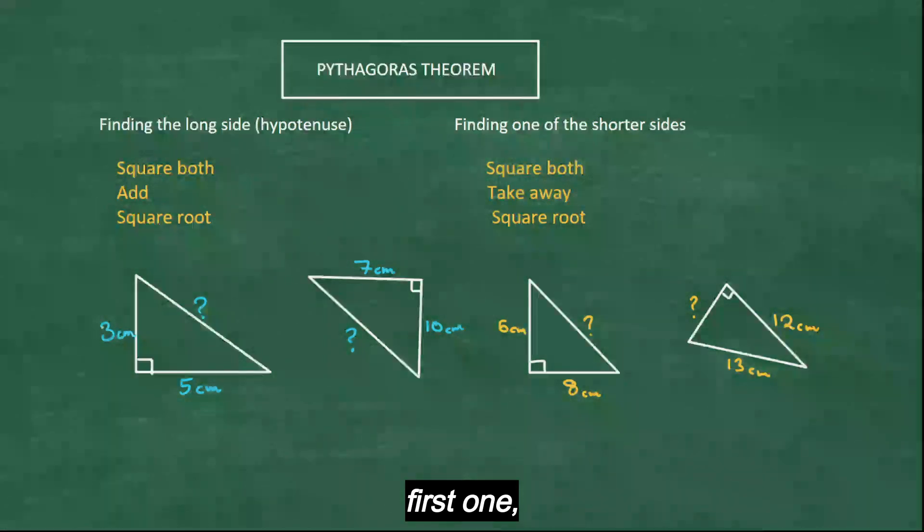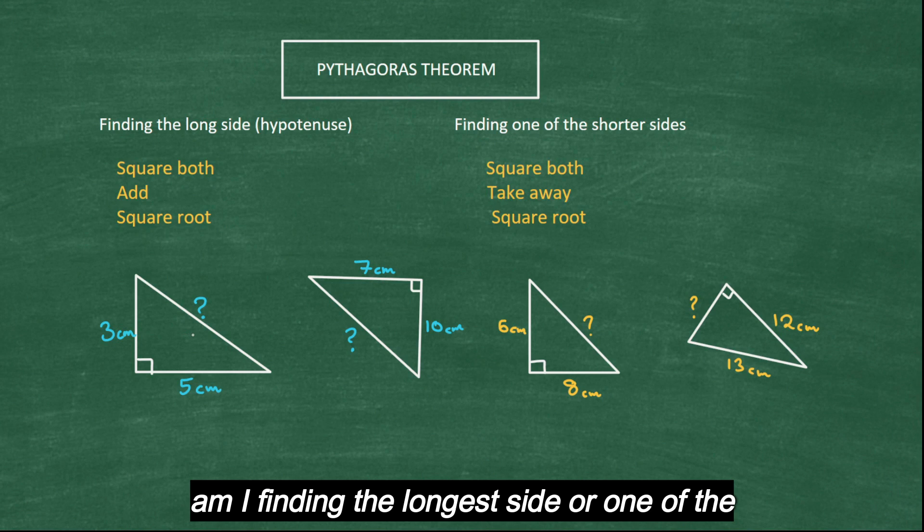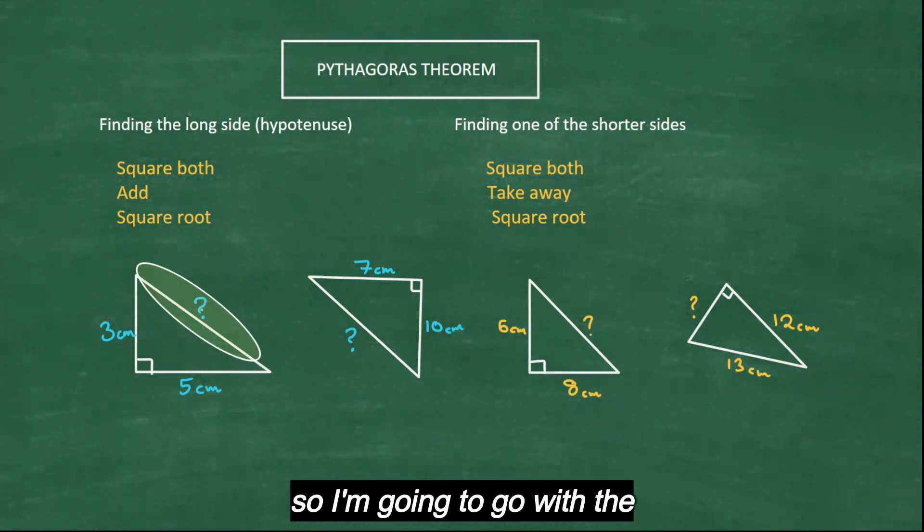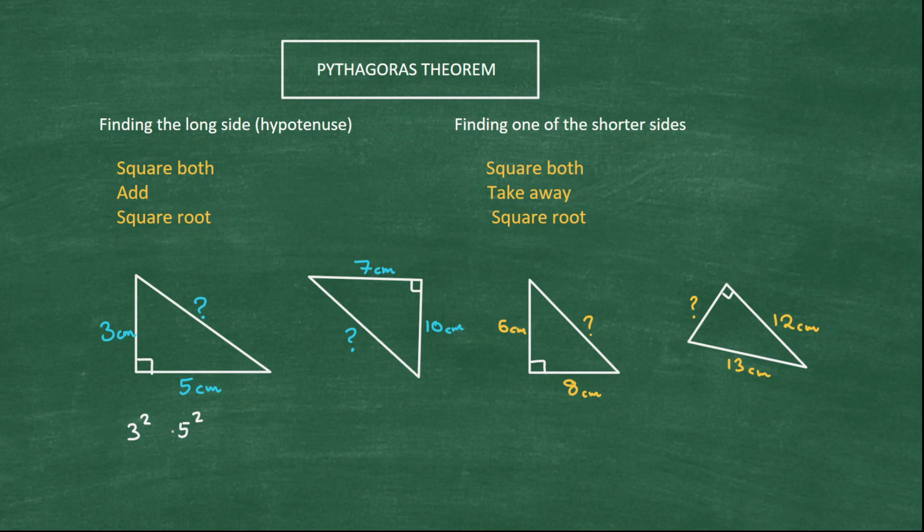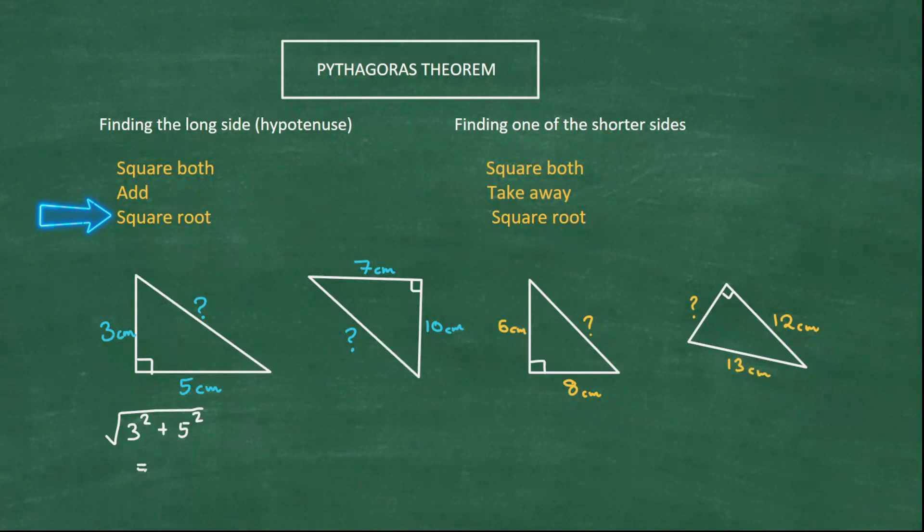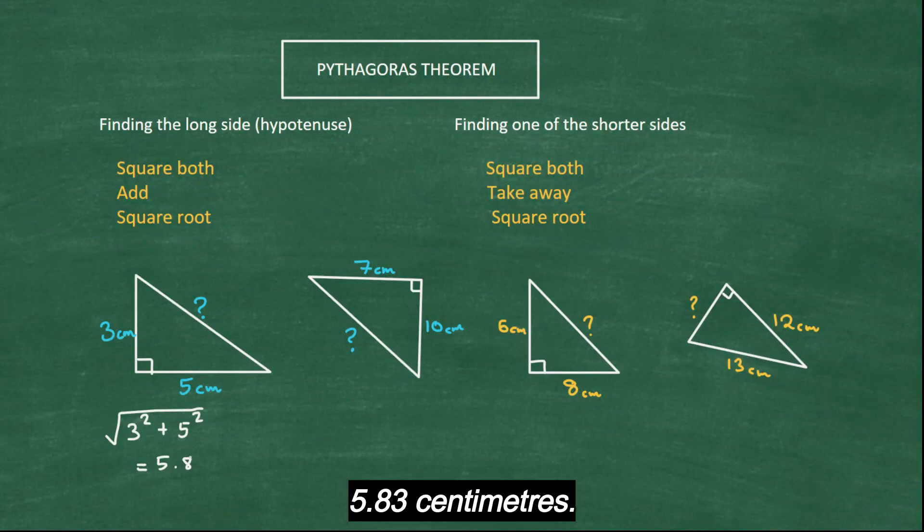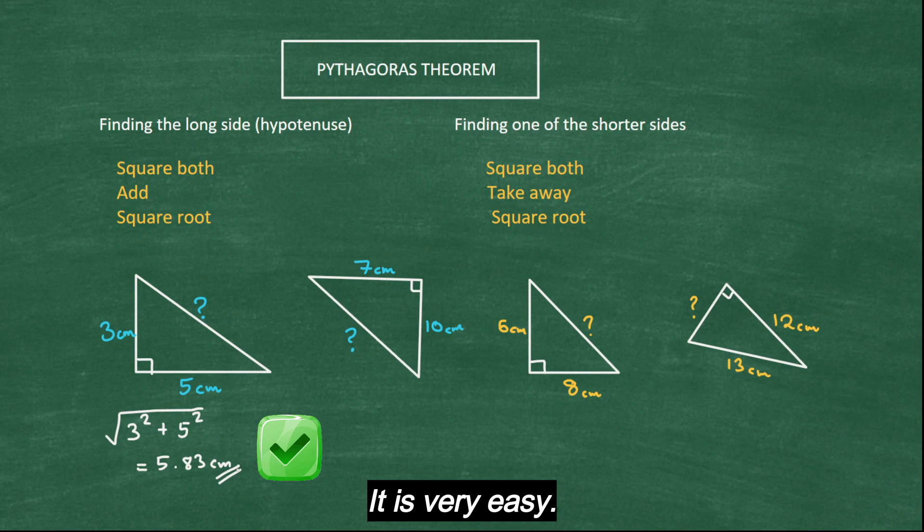So first one, am I finding the longer side or one of the shorter side? Obviously the longer side. So I'm going to go with the first version. So square both, 3², 5², add them up and root it. So I get the answer, 5.83 centimeters. It's very easy.